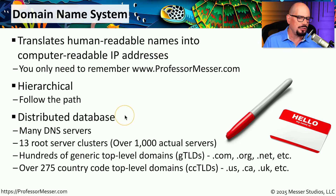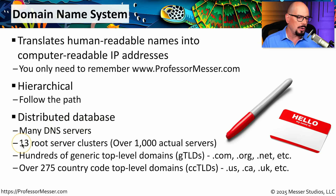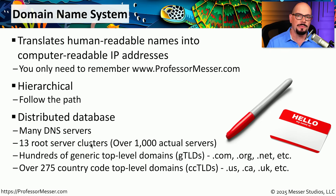We refer to DNS as a distributed database because it is scattered throughout the entire internet. Portions of this database are contained on different servers located on different networks around the world. If we drill down on the specifics of the DNS standard, there are 13 separate root server clusters. In reality, there are over 1,000 servers making up that root server cluster. That root cluster allows us to then communicate with DNS servers that are handling top-level domains.